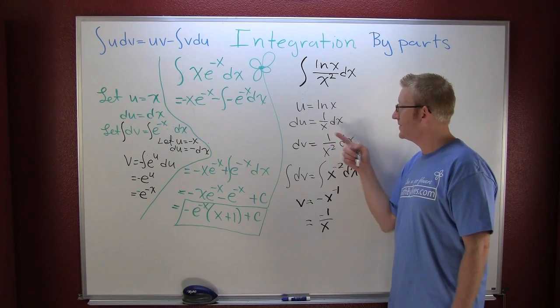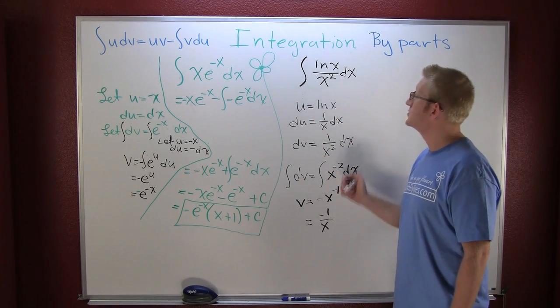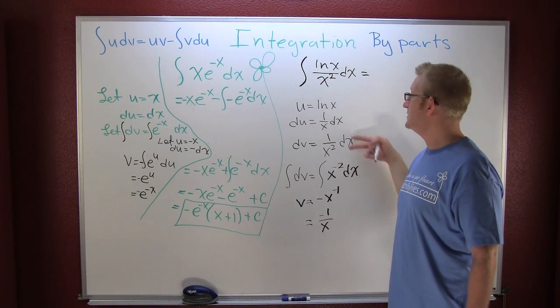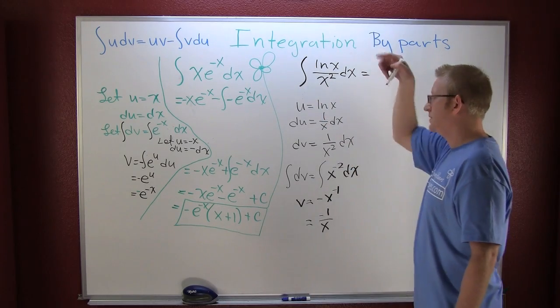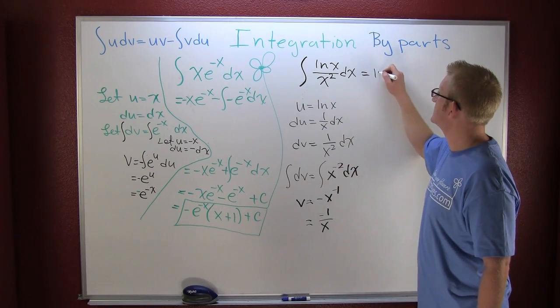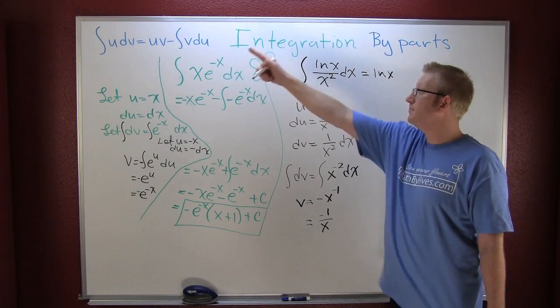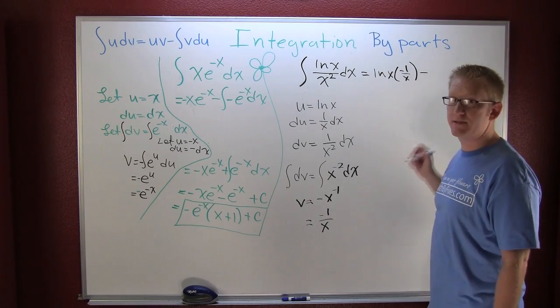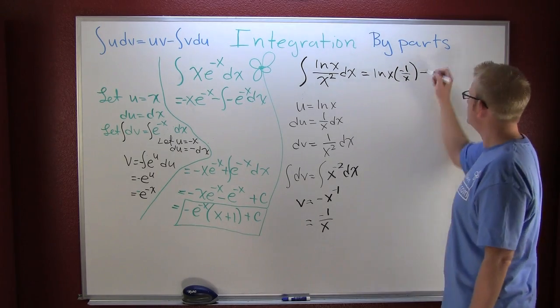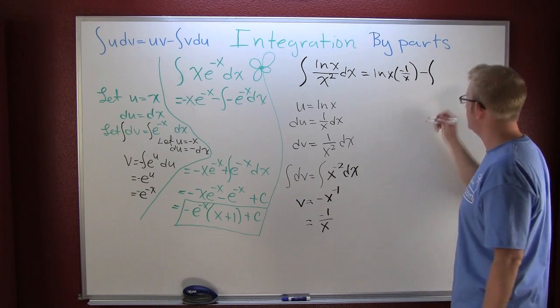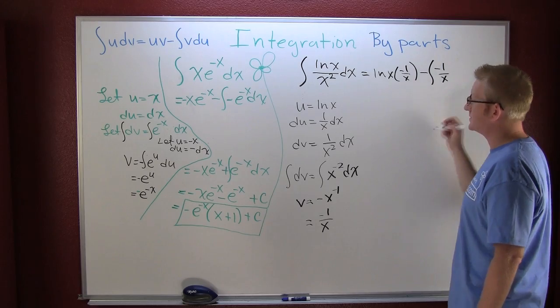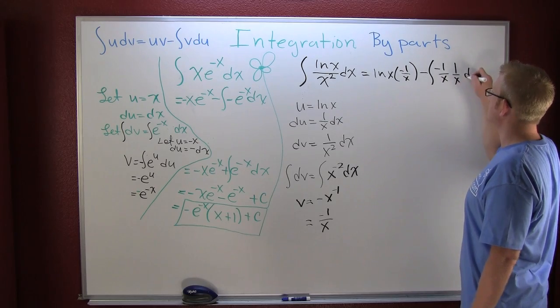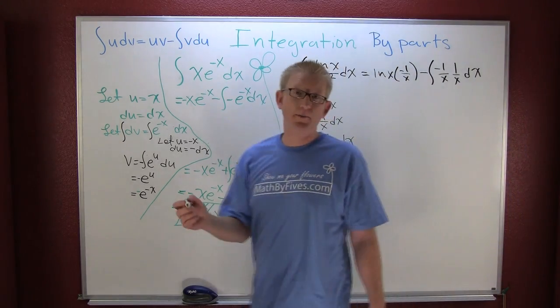So I have my pieces, I have my u, I have my du, dv, and v. So I'm going to go and plug this in. From my left side I have my u and my dv. I'm going to plug it into the right side. My u turned out to be natural log of x. I'm going to multiply that by my v, which is minus one over x, and I'm going to subtract off my new integral from my parts: v, minus one over x, times du, one over x dx.